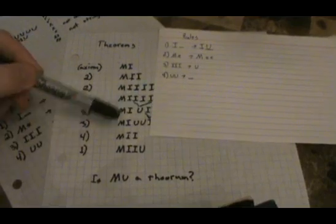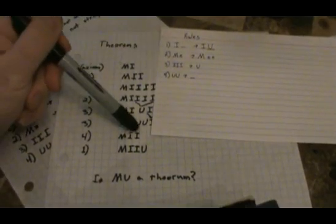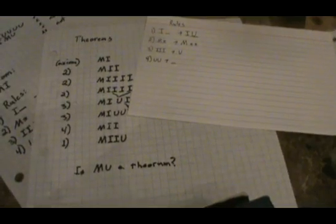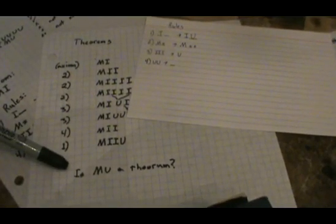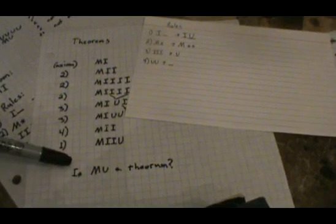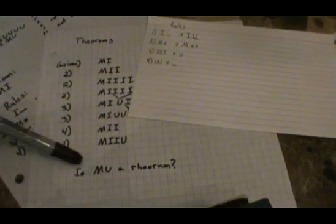To finish this off, let's use the only rule we haven't used yet — rule number one. Anything that ends in an I, you can add a U to the end. Where things start to get interesting is with the question: is MU a theorem? We certainly haven't proved it yet, and there are infinitely different things we can try. You're probably not going to find it, but frustratingly, you might not be able to prove that it is not a theorem either. Not knowing whether trying more and more uses of the rules will get you closer — it might just take 10,000 steps, or it might be impossible.